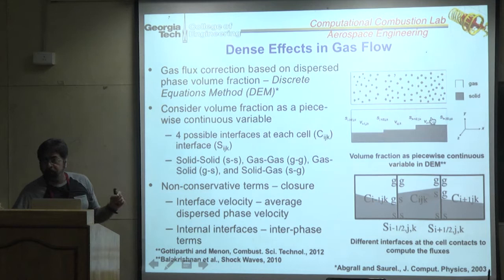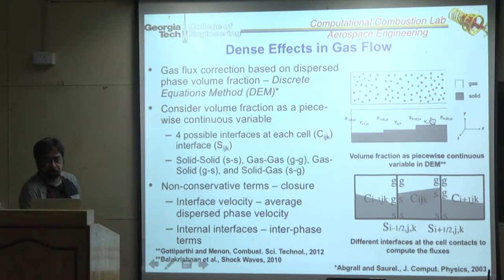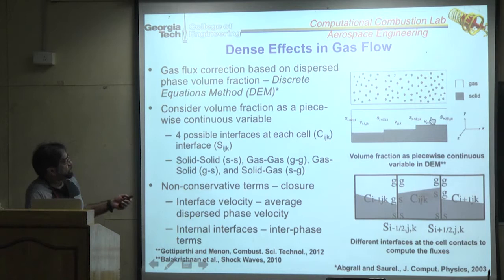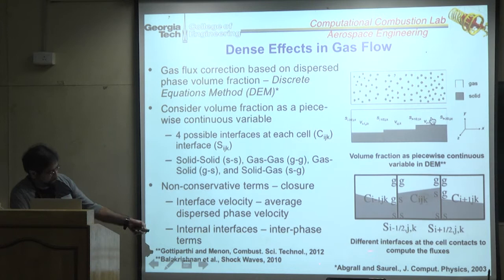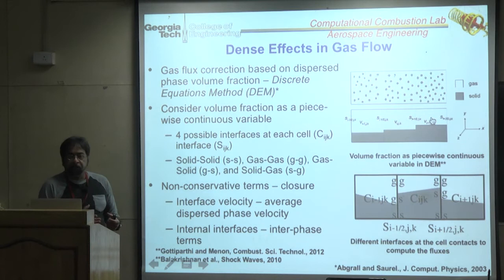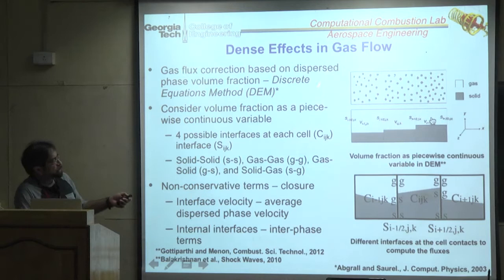When volume fraction is very small (10^-3 or 10^-4) — truly dilute — the blockage effect drops back to zero automatically. DEM is a correction method used for both Eulerian-Eulerian (always dense) and for Eulerian-Lagrangian when dense, automatically shutting off as the flow becomes dilute and recovering standard Eulerian-Lagrangian behavior.